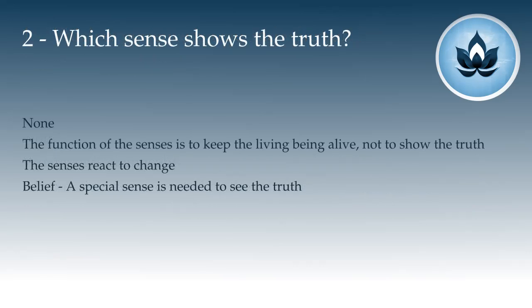Number two: which sense shows the truth? Again, probably it was heard that whatever comes through the senses is illusory, and so a specific or special kind of sense is imagined which will finally show the truth. Try to understand that if a sense is involved, it is illusion by necessity. That which cannot be sensed but still exists—that which is not an object of any sense—is you. Only you are known without any sensory intervention. Whatever sense you imagine—worldly, bodily, mechanical, magical—they are all going to show you the false.